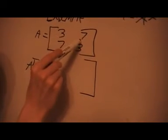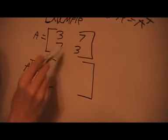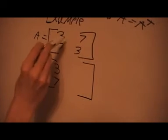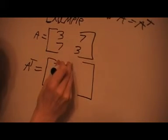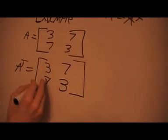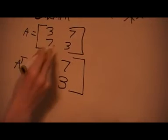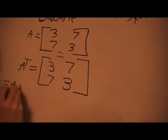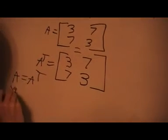Well this 3, 7 here now becomes a column so it becomes that. And this here 7, 3 now becomes a column so it becomes that. And this here 7, 3 now becomes a column so it becomes that transpose. So yes, it's symmetric.